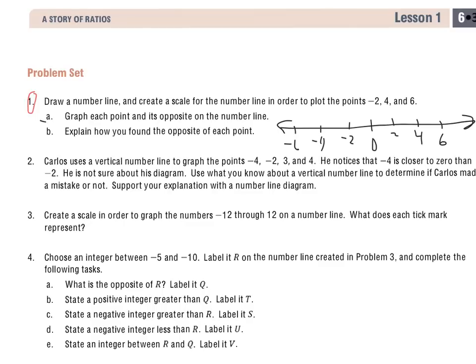So A says, graph each point and its opposite on the number line. I'm going to graph these points in blue for the original numbers. So I see I have a negative 2, so I'm going to come here and mark it as a negative 2. I have 4, so I'm going to go over to positive 4, and I have a positive 6.